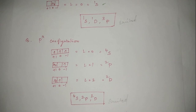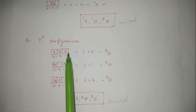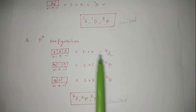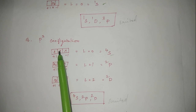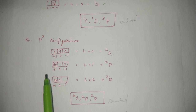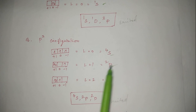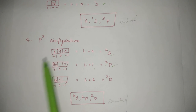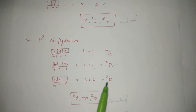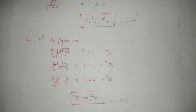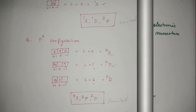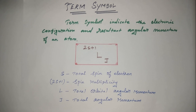For the p³ electronic configuration, find the possible excited state term symbols. With 3 electrons: all unpaired gives L=0, 3 unpaired electrons → 4S. Pairing one electron: L=1 → ²P with 1 unpaired electron. Further pairing: L=2 → ²D with 1 unpaired electron. These are the excited state possible terms for p³ configuration. If you like this video, please like, share, subscribe to the channel, and click the bell icon. Thanks for watching.